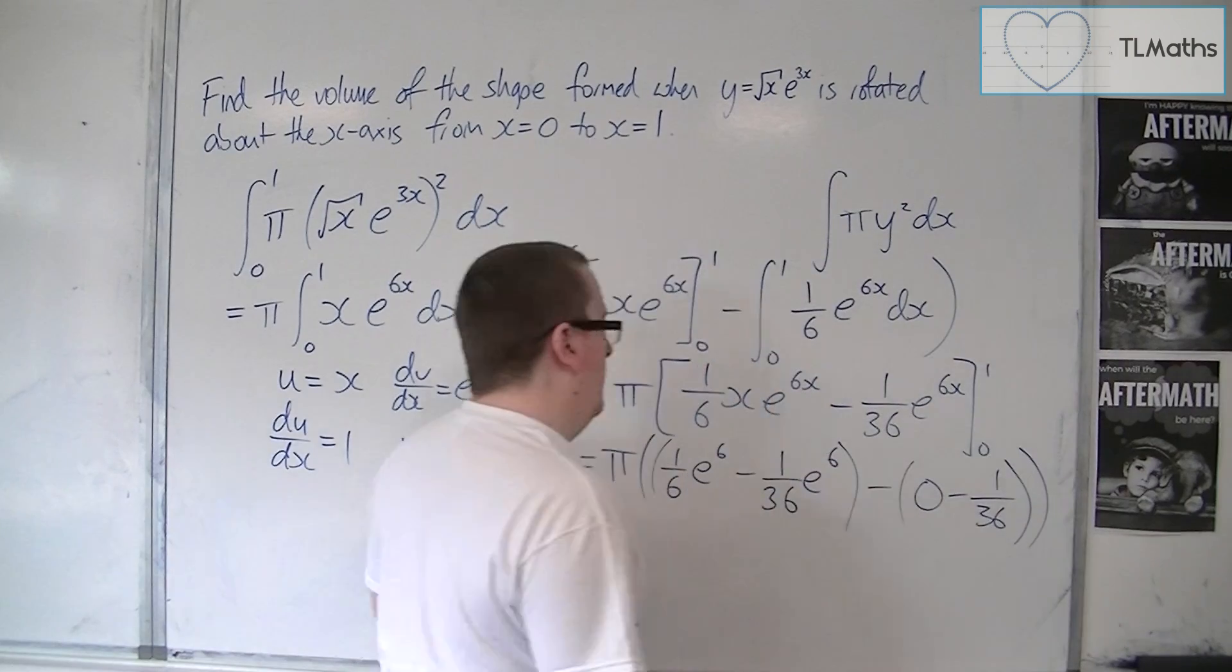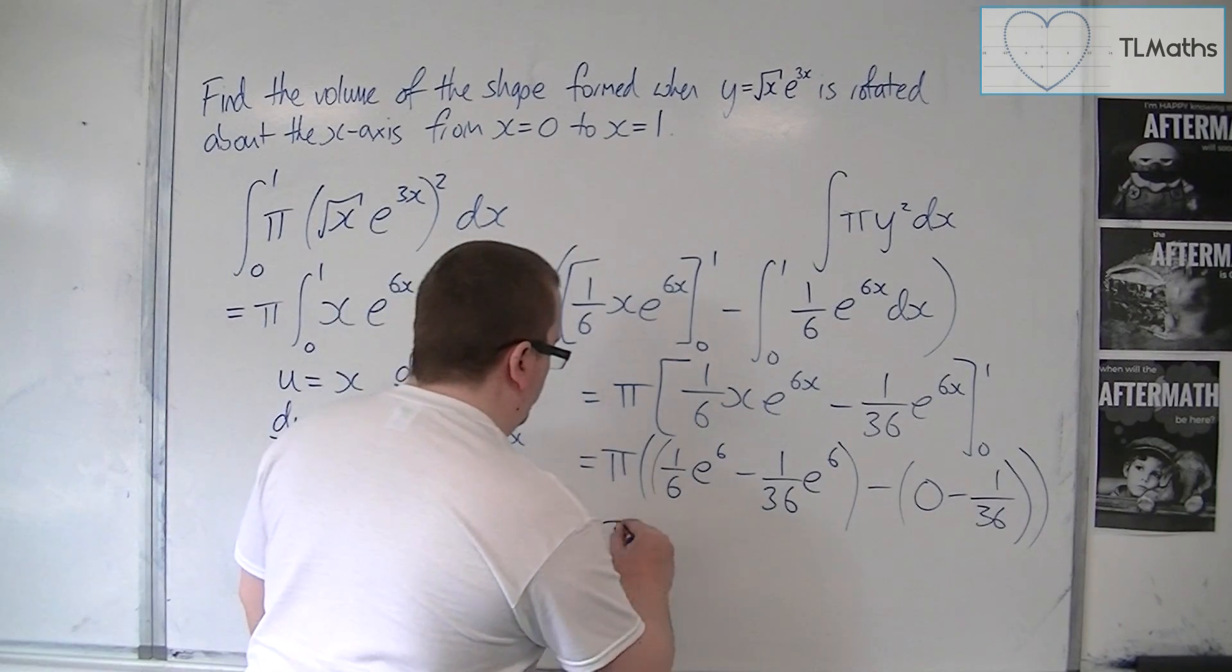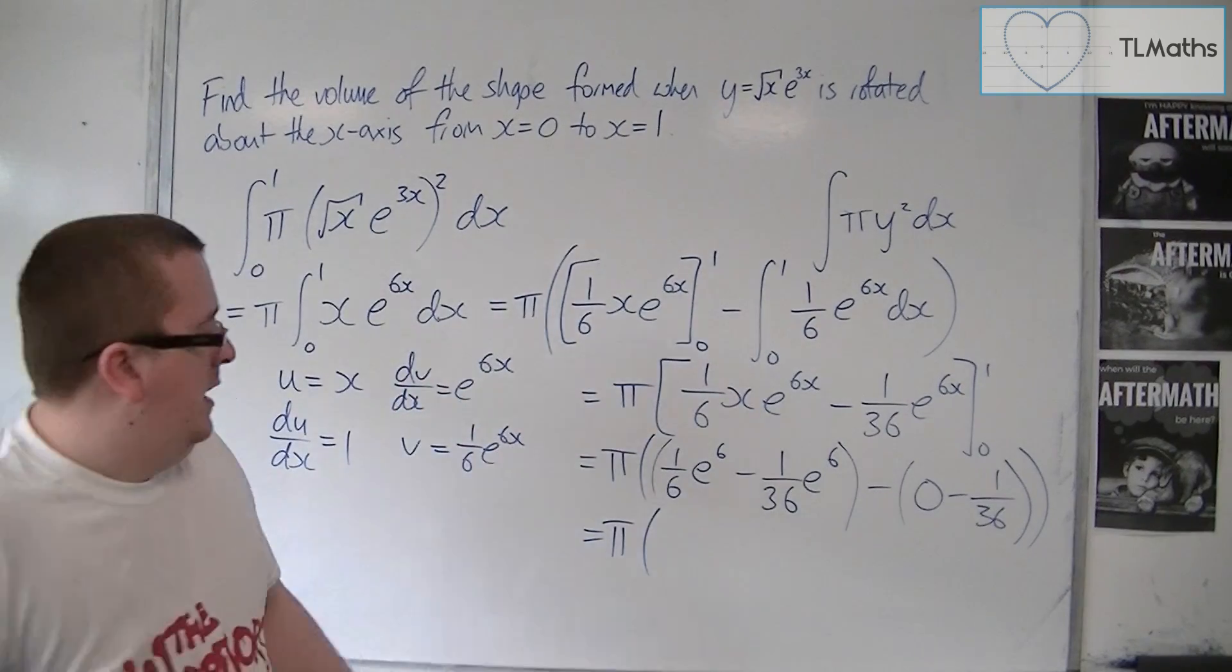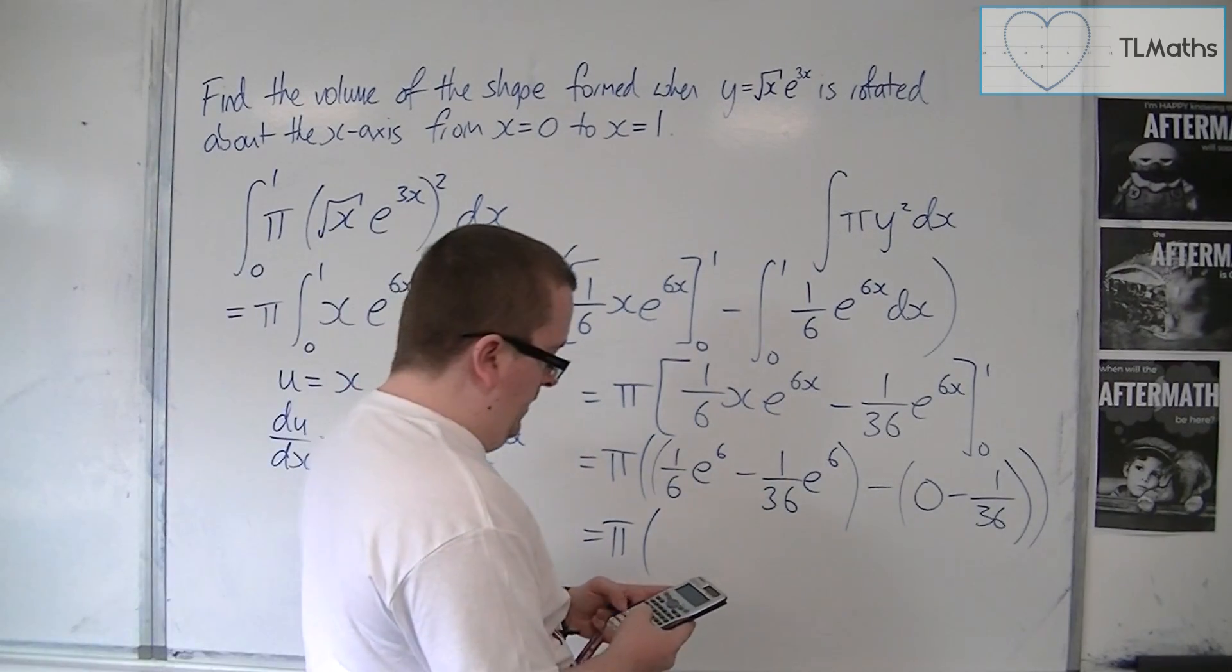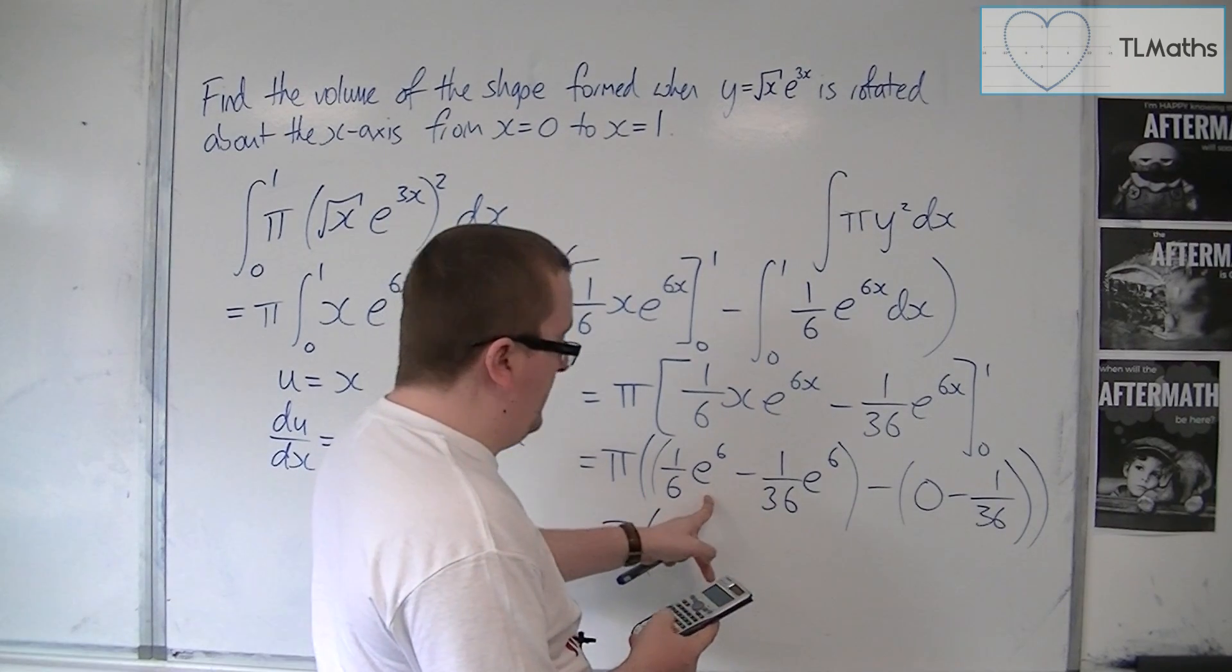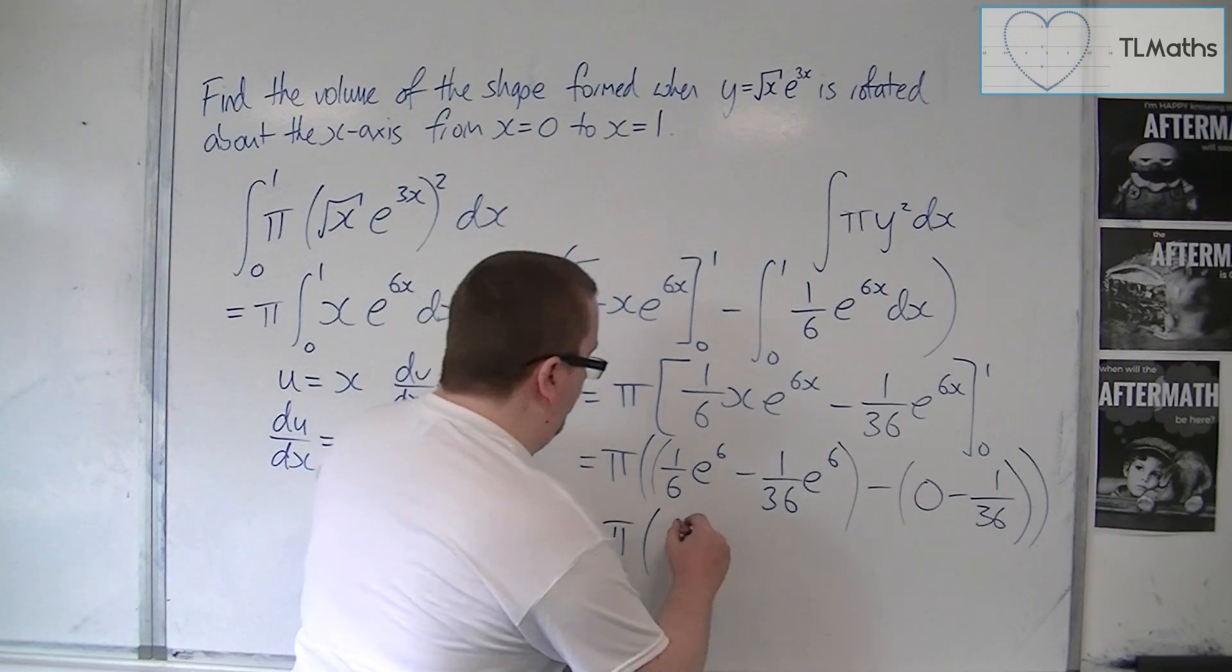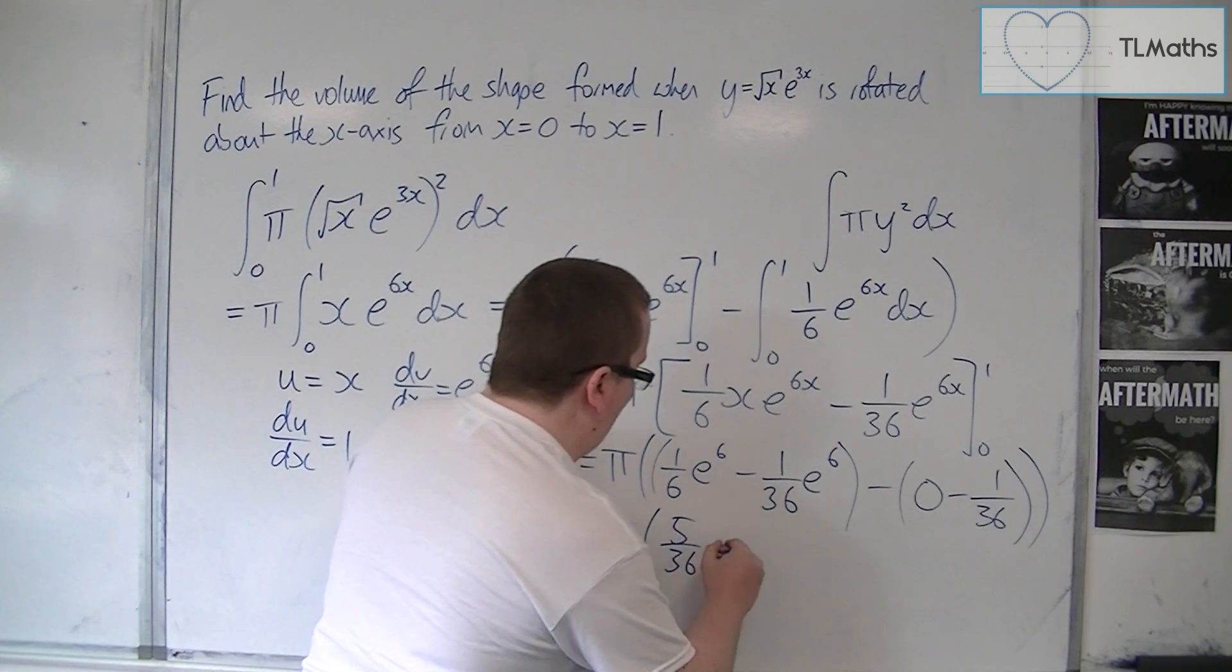So, we have 1 over 6 e to the 6x, take away 1 over 36, so that's going to give us 5 over 36 e to the 6.